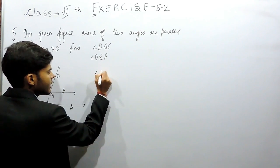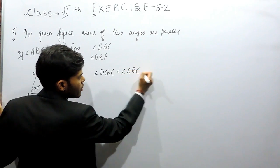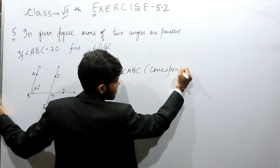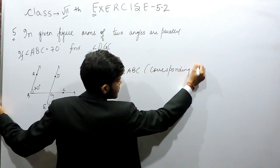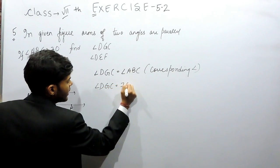So angle DGC is equal to angle ABC because of corresponding angles. So angle DGC is equal to 70 degrees.